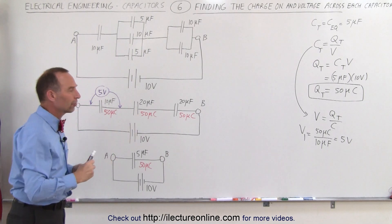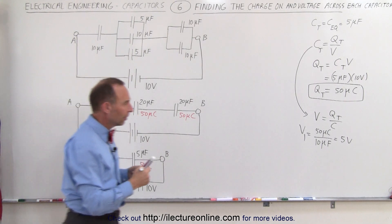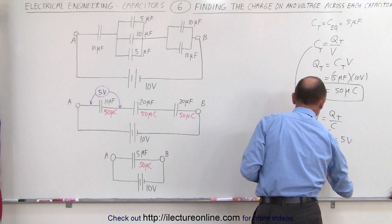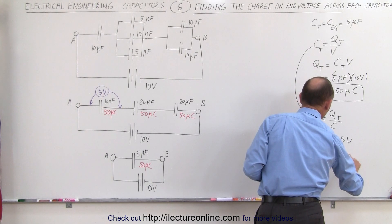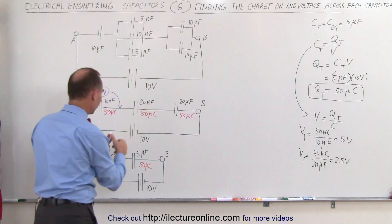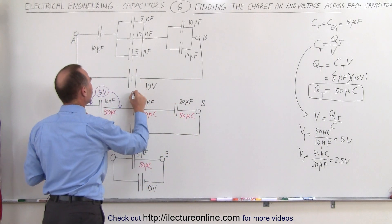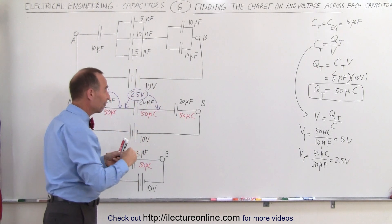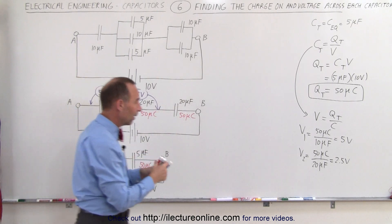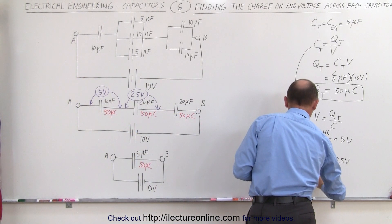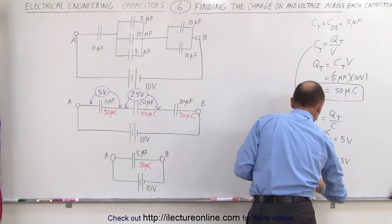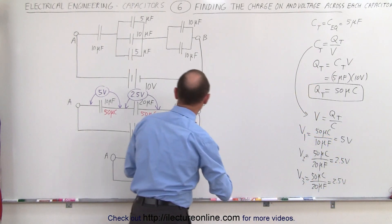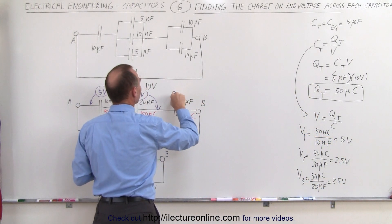For the second equivalent capacitor, V2 equals 50 microcoulombs divided by 20 microfarads, which is 2.5 volts. And for the third capacitor, since it has the same equivalent capacitance, V3 also equals 50 microcoulombs divided by 20 microfarads, which is 2.5 volts again.